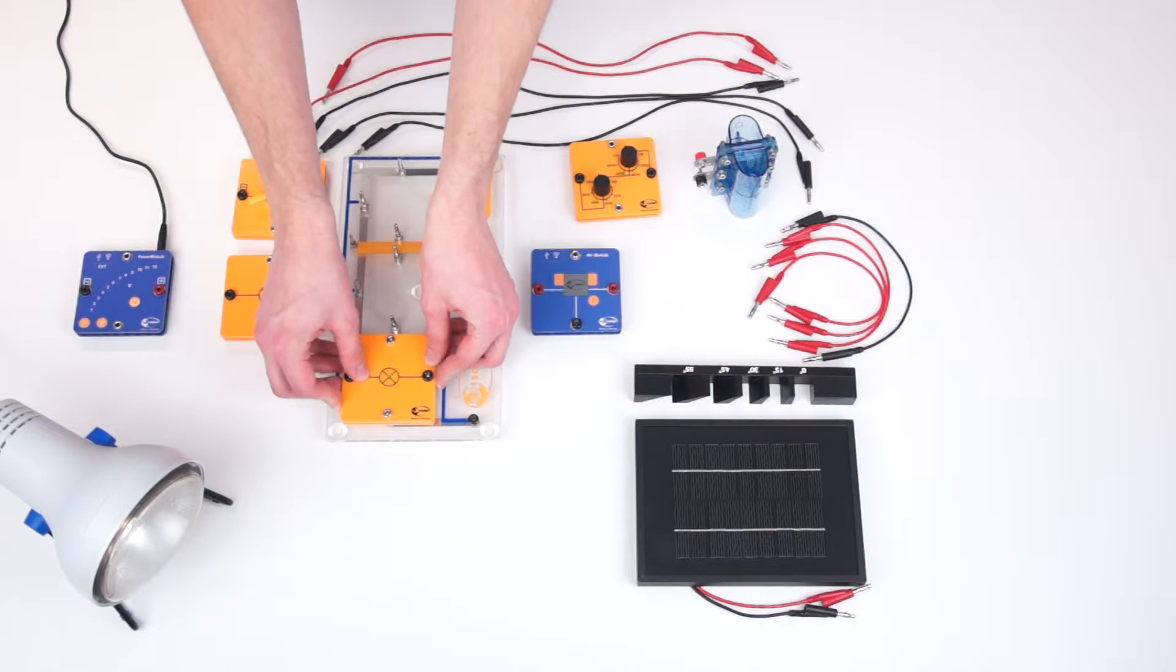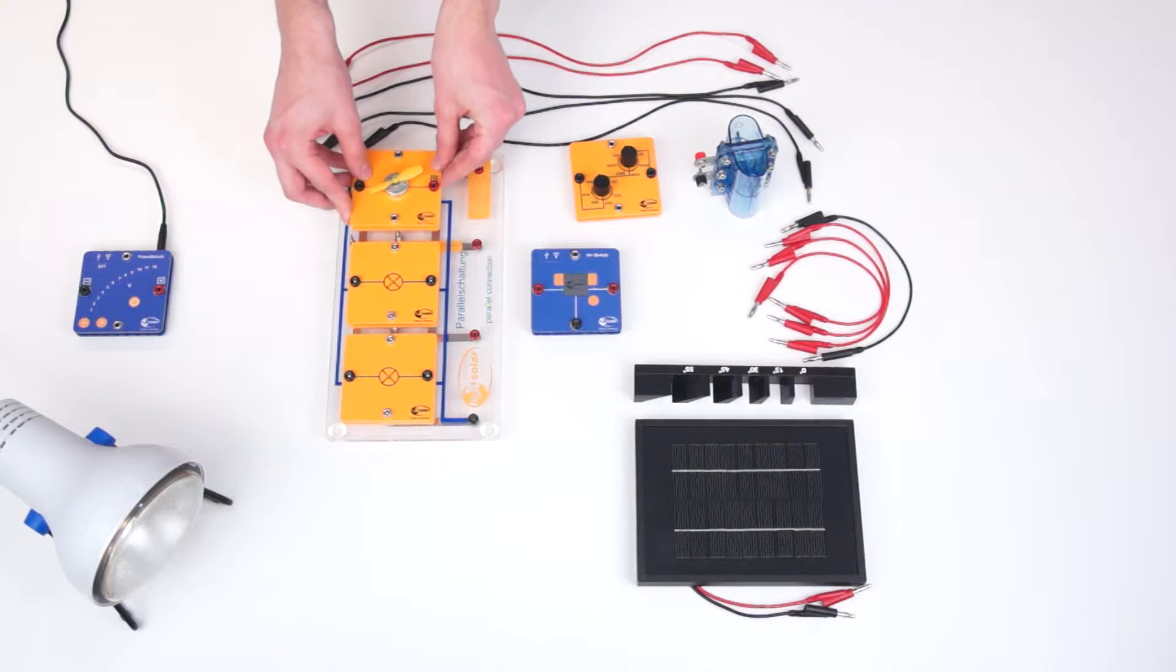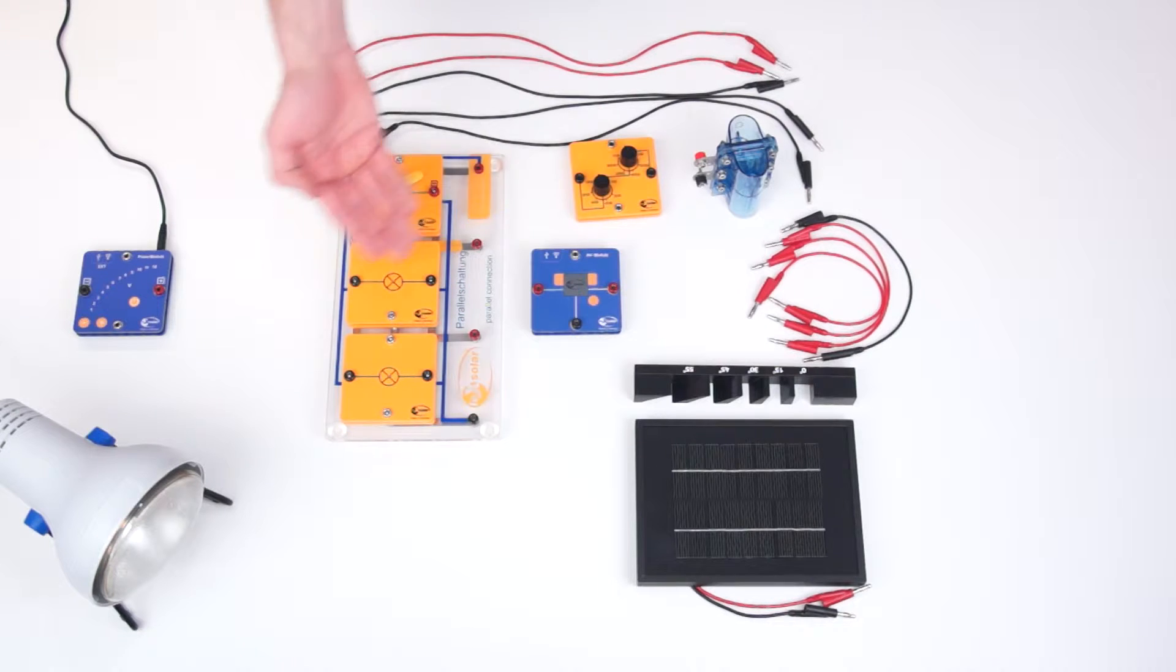First we stick the two lightbulb modules and the motor module onto the base unit. They are now in a parallel circuit and thus represent a building with many consumers.